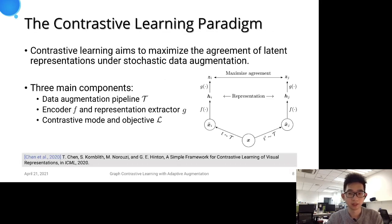Contrastive learning aims to maximize the agreement of latent representations under stochastic data augmentation. SimCLR sets the paradigm for contrastive learning. Specifically, it derives two versions of one sample and pushes the embedding of the same sample close to each other and that of different samples apart.